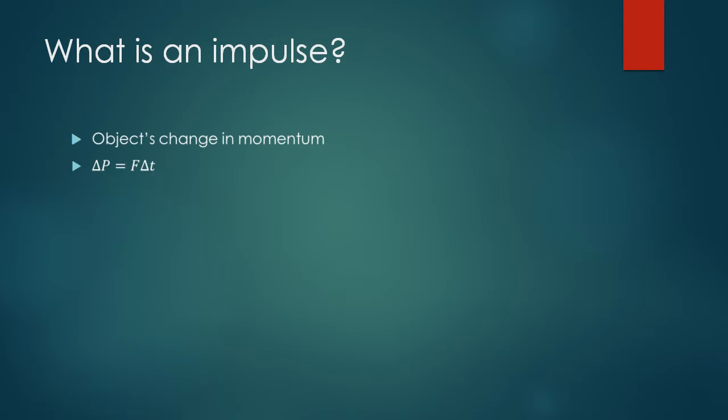Another thing that I want to talk about is impulse. What is an impulse? Well, impulse is an object's change in momentum, and it is expressed as delta p, or the change of momentum, equals the force times delta t, which is the time interval when the change of momentum happens.